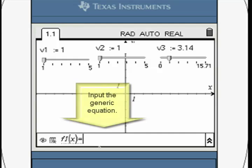Press Tab several times to get to the F1 area. Input the generic equation as shown and press Enter.